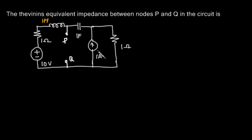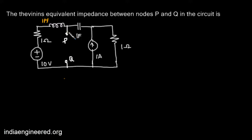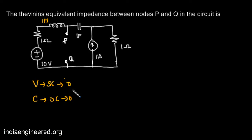We are asked to find the Thevenin's equivalent impedance between nodes P and Q in the circuit. Since there are no dependent sources, we can open-circuit the terminals P and Q, which is already done. Voltage sources must be short-circuited to make their value zero, and current sources must be open-circuited to make their value zero. So we can redraw the circuit making these changes.